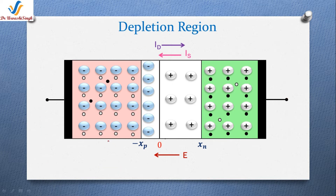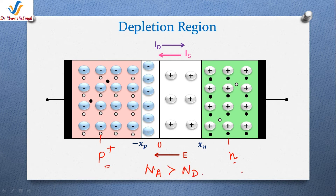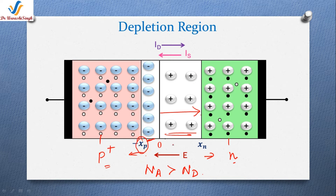Now let's see what happens if we heavily dope one side of the open circuited PN junction diode in comparison to the other side. Taking this example where the concentration of the acceptor is greater than the donor: students will know that the depletion region extends in both p and n materials, but for unequal doping the width of the depletion region on the two sides will not be equal. To uncover the same amount of charge, the depletion region will extend deeper into the more lightly doped material.